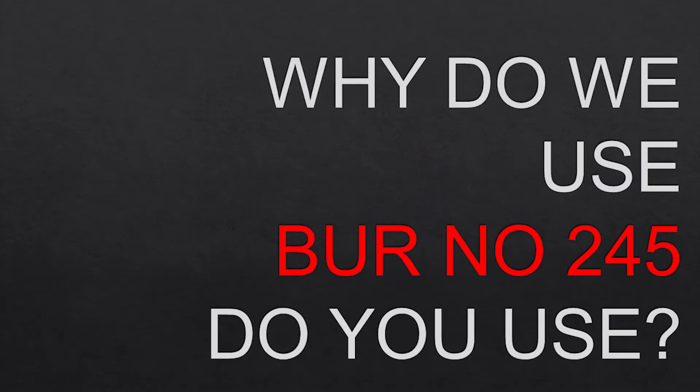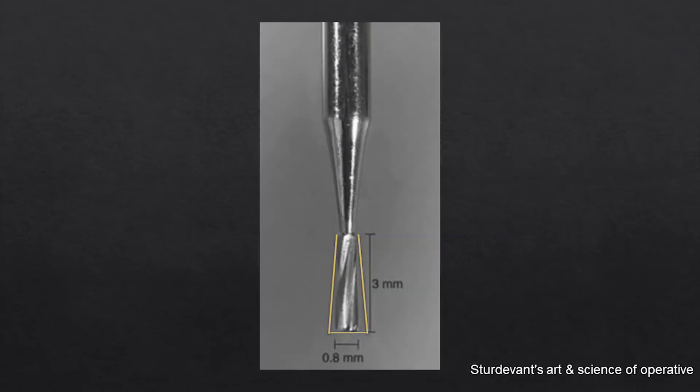The next important question is: which bur do you use to prepare a class 2 cavity for amalgam? The bur number is 245. The blade is designed such that when kept parallel to the long axis of the tooth, it gives a convergent wall, which is a very important primary retention feature for dental amalgam. Note the dimensions of the bur: diameter is 0.8 mm and the height of the cutting blade is 3 mm.